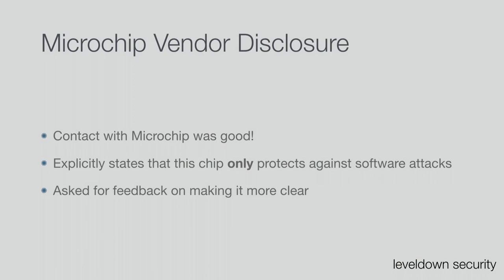I talked to Microchip — it was great, they were super nice — and also to Trustonic, who were very open to this. They explicitly state that this chip only protects against software attacks. While it has some hardware features like tamper-resistant RAM, it is not built to withstand fault injection attacks. Comparing different revisions of the data sheet, some early ones mentioned some fault injection resistance, and that language is now gone. They are also asking for feedback on making it clearer what this chip protects against — which is a noble goal, because marketing versus technicians is always an interesting fight.